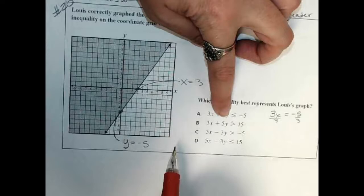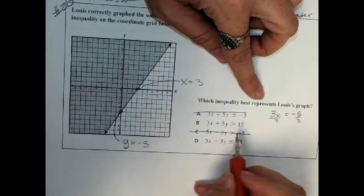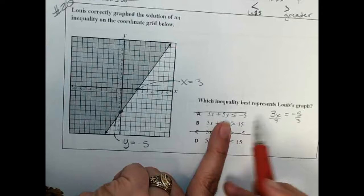And likewise, this is not going to be the right one either. It's got to be one of these here. If I cover this up, I have 3x equals 15, so x equals 5. Oh, that's not right. I need x equals 3, so that's not the right one.